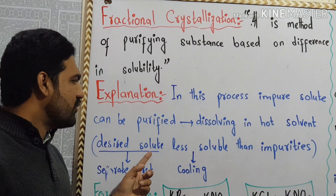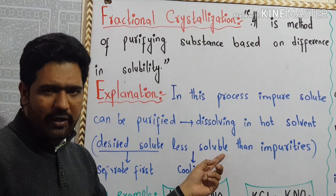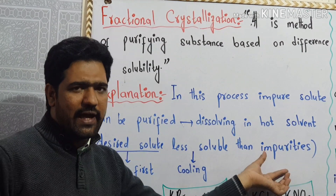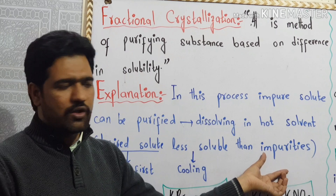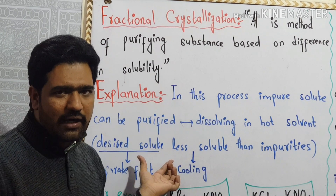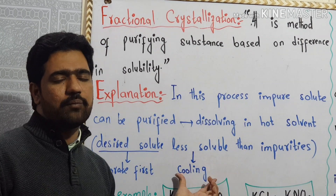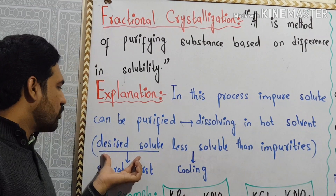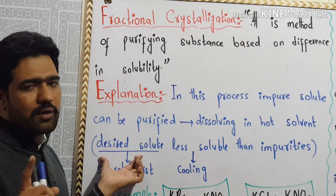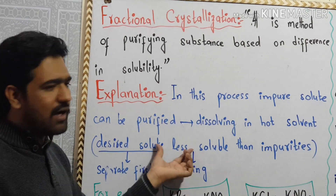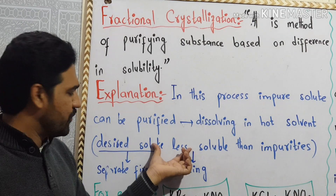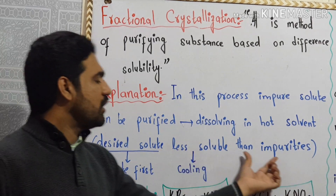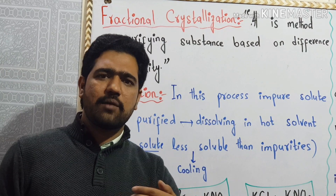The desired solute is less soluble, while the impure component dissolves quickly in hot solvent. The pure compound dissolves slowly afterward. Then the desired solution is separated first, and the impure remains.